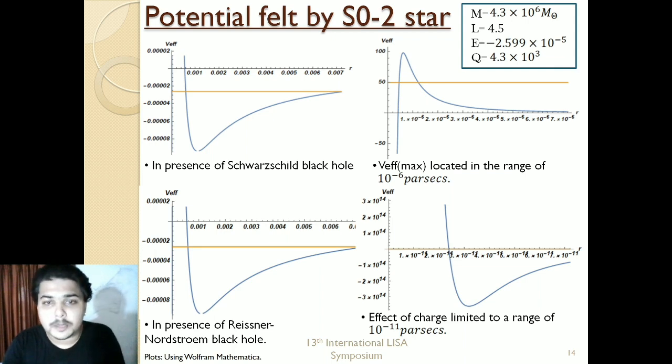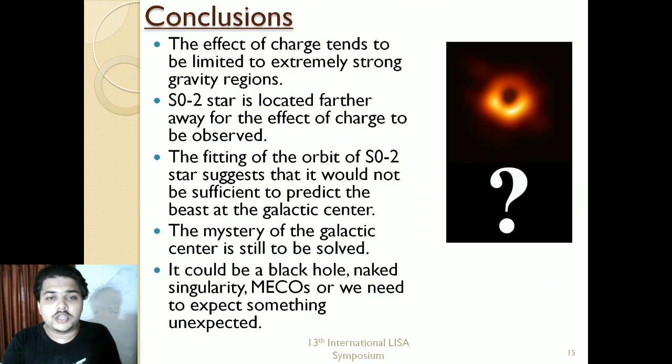I would conclude my presentation as follows: The effect of the charge tends to be limited to extremely strong gravity regions. The S0-2 star is located farther away comparatively to observe the effect of the charge. The fitting of the orbit of S0-2 star suggests that it would not be sufficient to predict the beast at the galactic center. For now, we need to have more data, more theoretical and experimental data to compare.